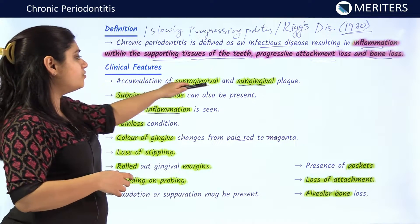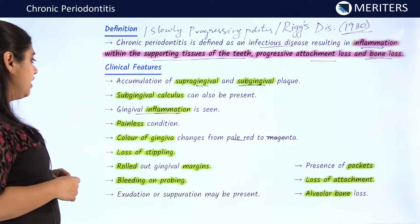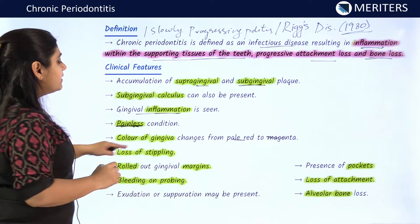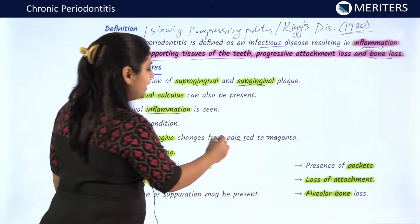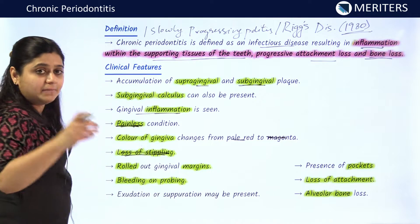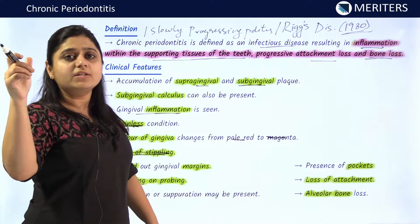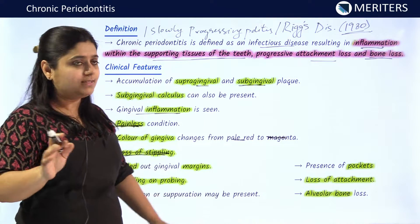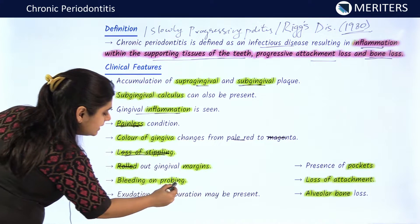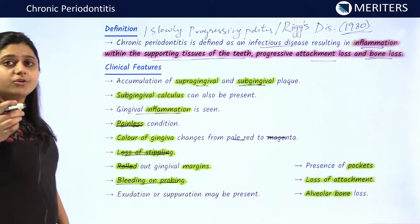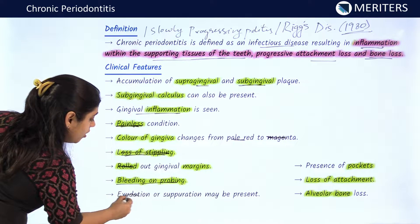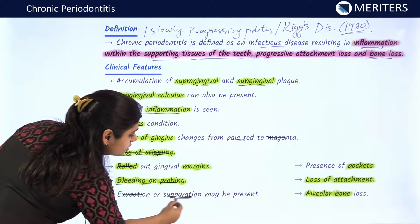The clinical features due to supra-gingival and sub-gingival plaque include gingival inflammation. This condition is usually painless and the color of the gingiva changes from pale red to magenta. There is loss of stippling — the orange peel appearance seen in the gingiva is lost because of gingival inflammation. The margins of the gingiva are rolled out and it bleeds easily on probing. Whenever a periodontal probe is inserted, it bleeds within 10 seconds. Exudation or suppuration may also be present.